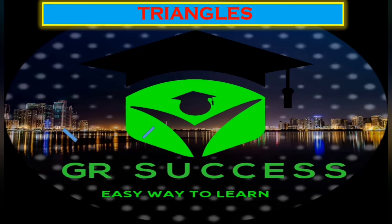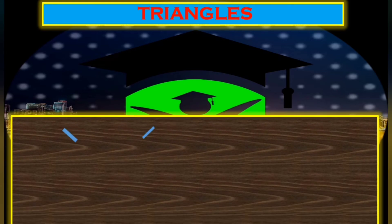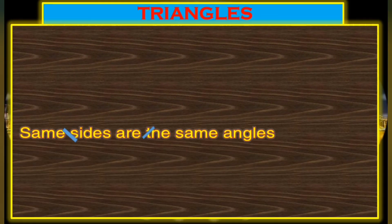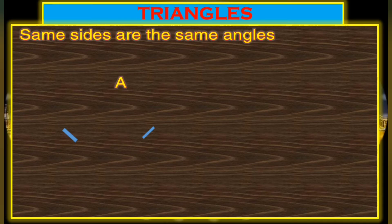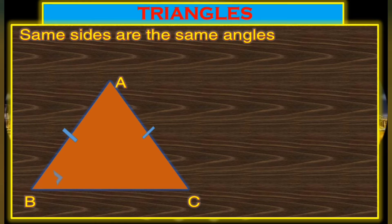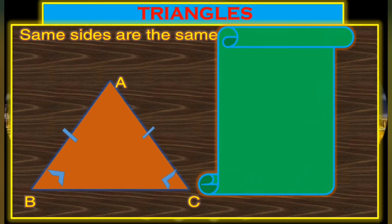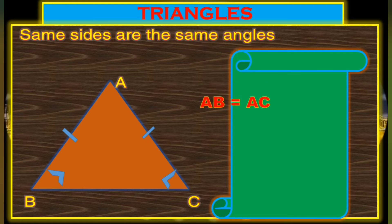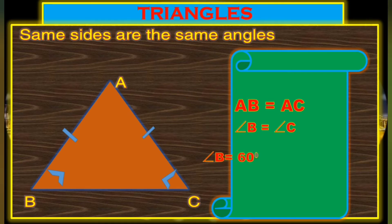The same sides have the same angle — equal sides give equal angles. If sides AB and AC are both 5 cm, then angle B and angle C are both equal. For example, if AB equals 5 cm and AC equals 5 cm, then angle B equals 60 degrees and angle C equals 60 degrees. Same sides, same equal angle.